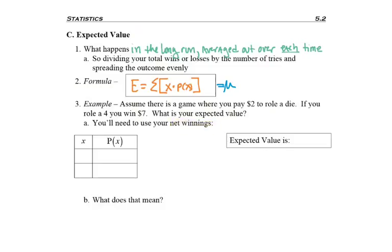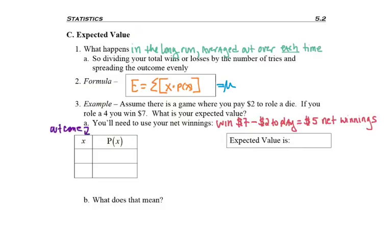We've talked about this before when we did odds. Even though you're going to win $7, don't forget you have to subtract off the $2 you paid to play, so you're only netting five new dollars. When it comes to our expected value table, it's the same as our discrete variable table, where we list the outcomes — the things that can happen. In our case, you can either win or lose. Your net winnings would be $5, and if the 4 doesn't come up on the die, then you'd be out $2, which we make negative.